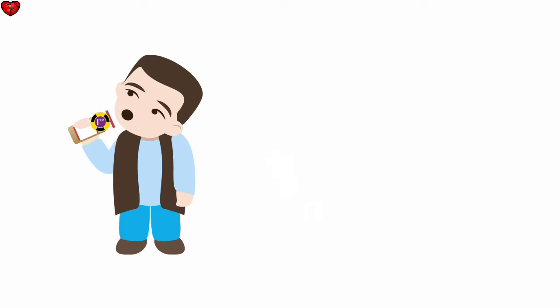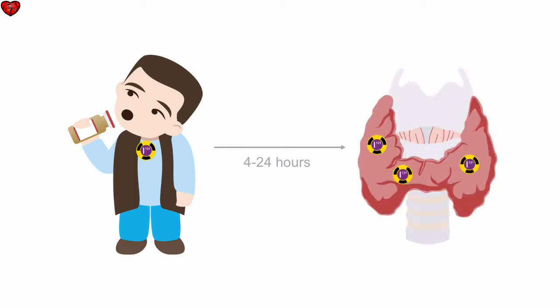The patient is given an oral dose of radiolabeled iodine, and then four to 24 hours later, we take a scan of their thyroid. This shows the areas that have taken up the iodine and helps us measure both thyroid function and thyroid structure.